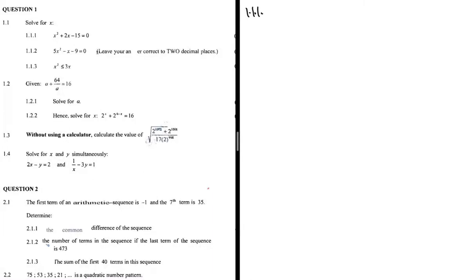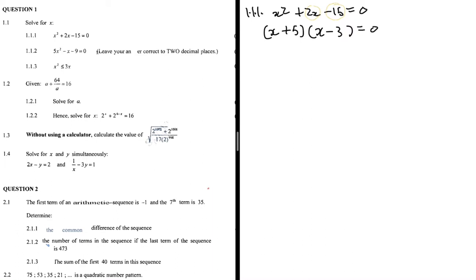Problem 1.1.1: x² + 2x - 15 = 0. The question I ask myself is: which two numbers multiply to give me -15 but when added give me 2? That is -3 and 5. So the result is (x + 5)(x - 3) = 0.